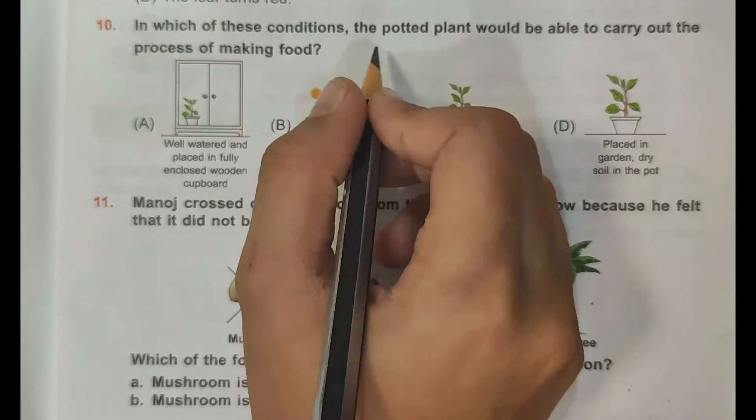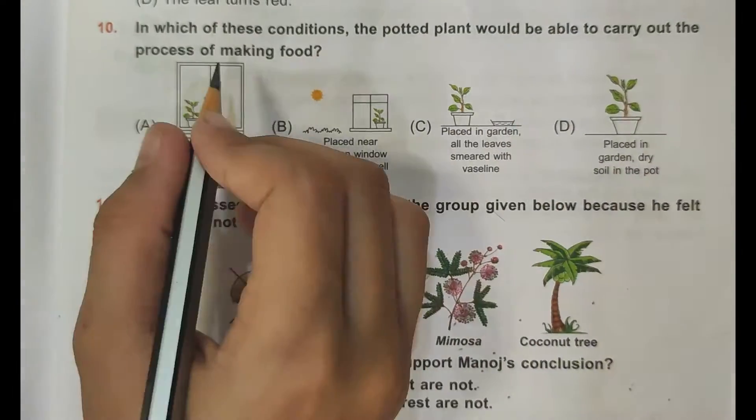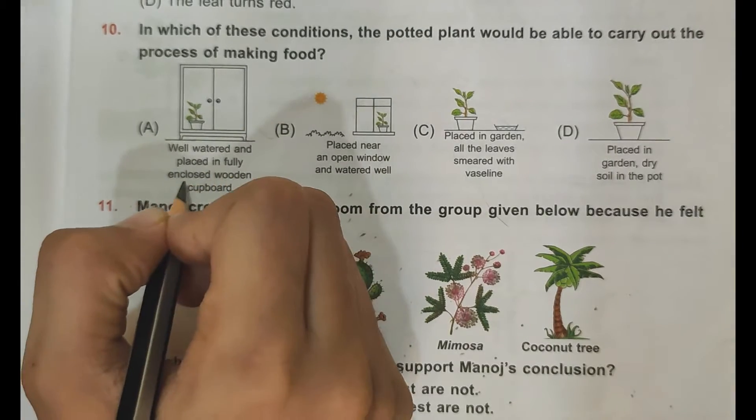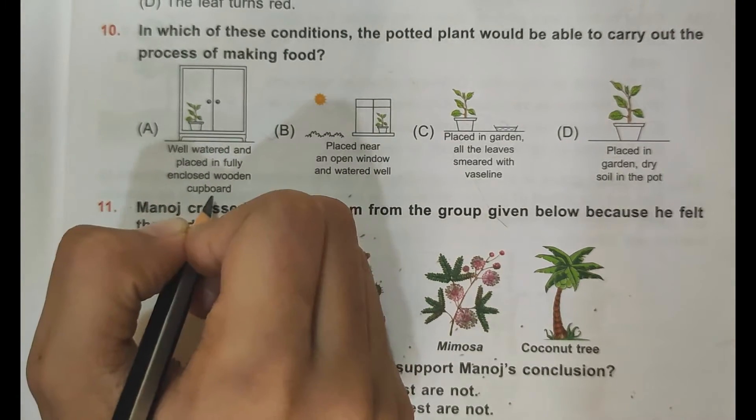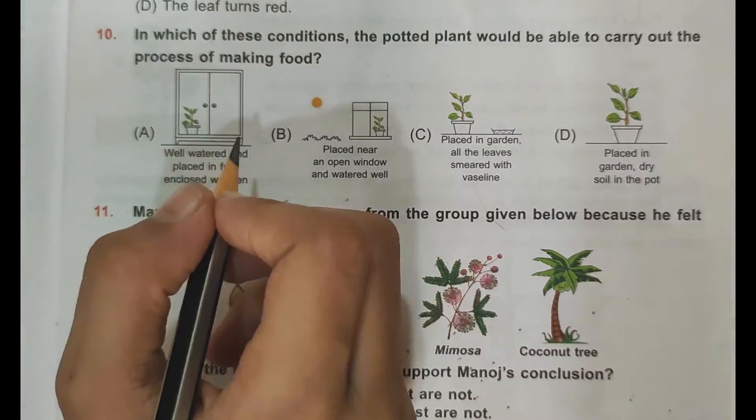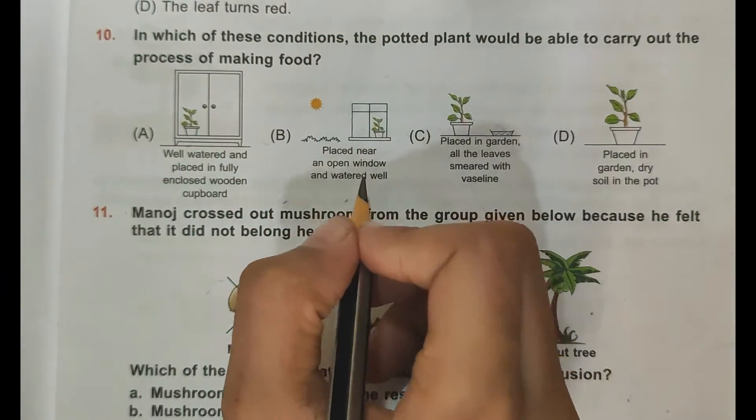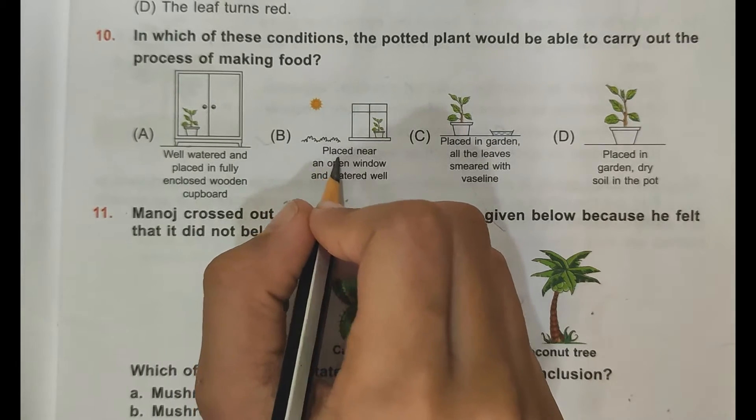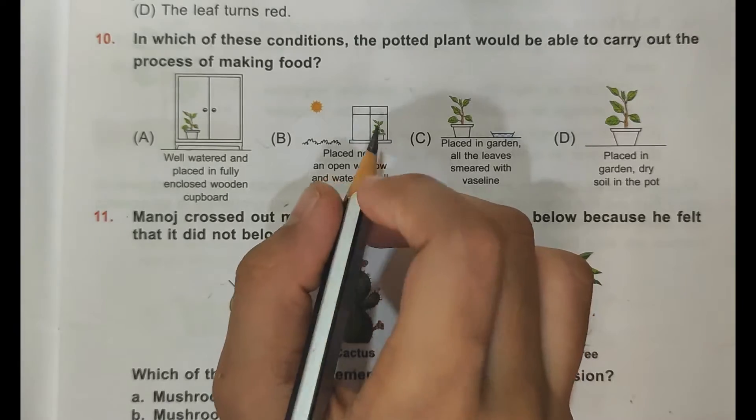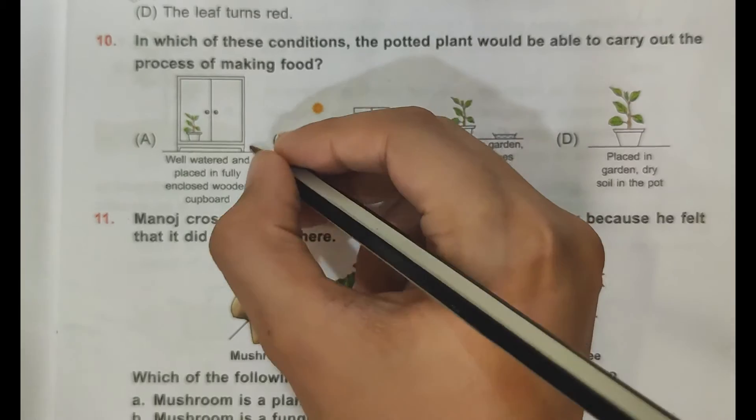In which of the following conditions the potted plant would be able to carry out the process of making food? A: watered well and placed in fully enclosed wooden cupboard - the sunlight will not reach so the plant cannot grow. Second option: placed near an open window and watered well - sunlight will come and it is watered well so it will grow. So B is the correct answer.